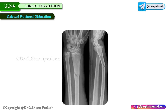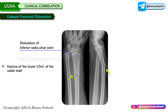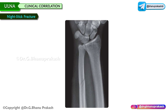Galeazzi fracture-dislocation is a dislocation of the inferior radioulnar joint with an associated fracture of the lower one third of the radial shaft. Nightstick fracture is a fracture of the ulnar shaft due to a direct force on the forearm, commonly when someone raises their forearm in defense.